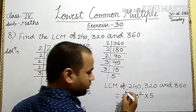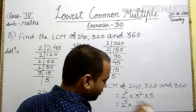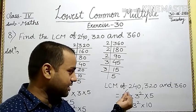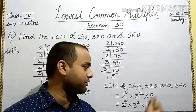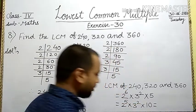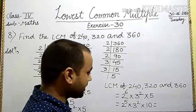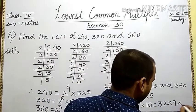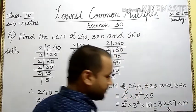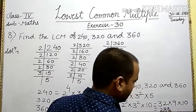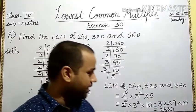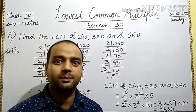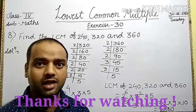First of all, take 2 with maximum power: 2 to the power 6 (from 320). Then 3 to the power 2 (from 360) gives 9. And 5 occurs 1 time. We multiply: 2 to the power 6 is 64, into 9 is 576, into 5 is 2880. Your required answer is 2880. Is it clear? I hope you will complete exercise 30 with the help of this video. That's all. Thank you. Take care. Bye.